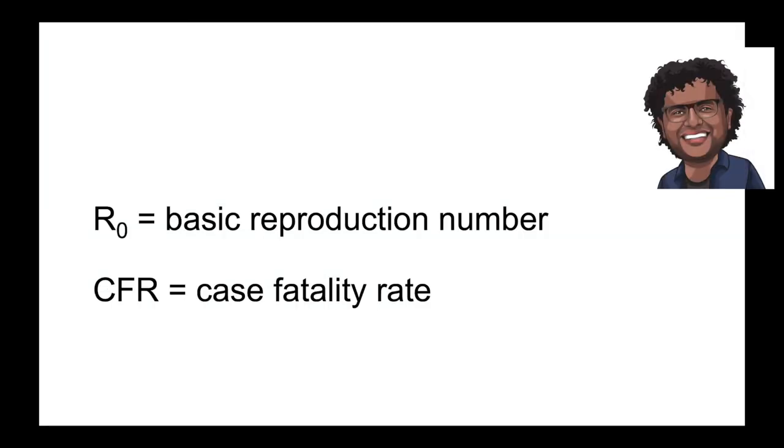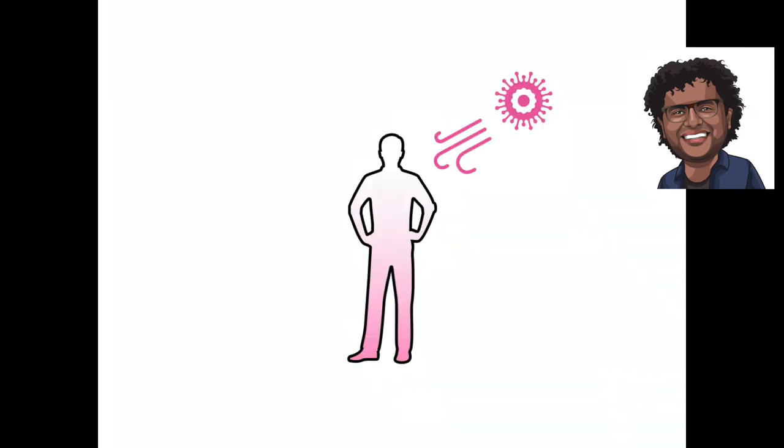Now that we have discussed the case fatality rate, let's move on to talking about the famous and mysterious metric called the basic reproduction number. But before we begin, let's imagine what it takes for an epidemic to spread in a population.